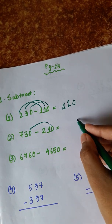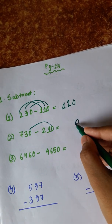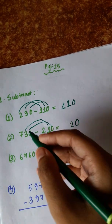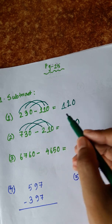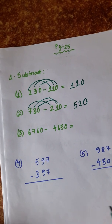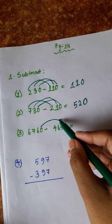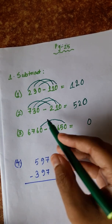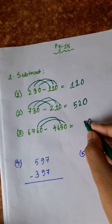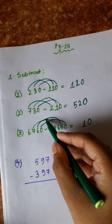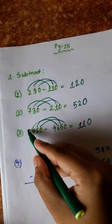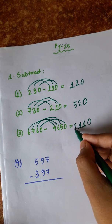Next problem: 0 minus 0 is 0. 3 minus 1 is 2. 7 minus 2 is 5. 6 minus 5 is 1. So 76, 1, 64, answer is 2.